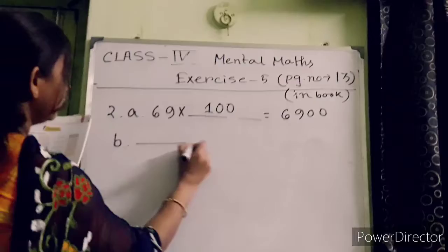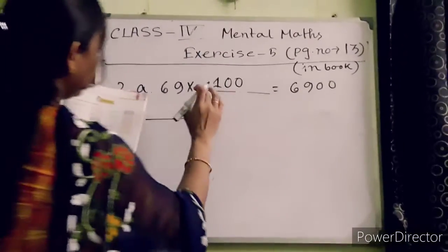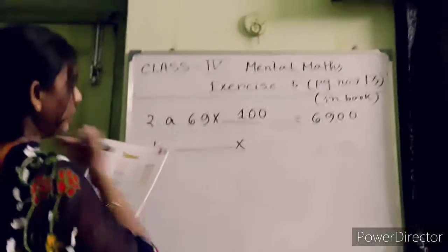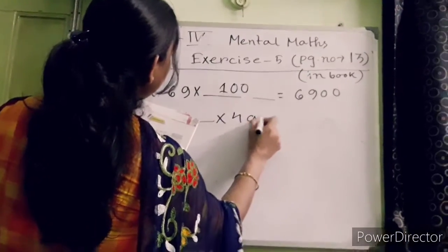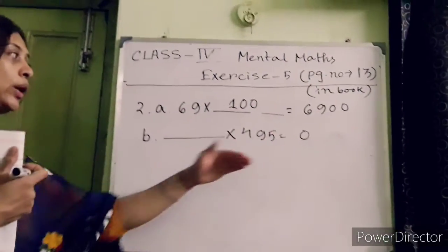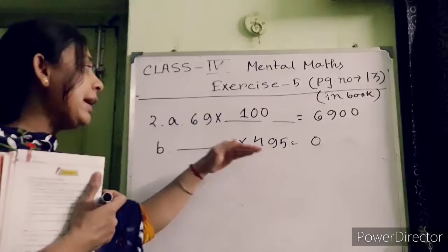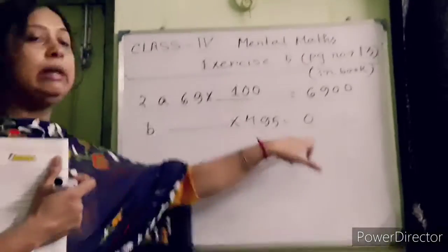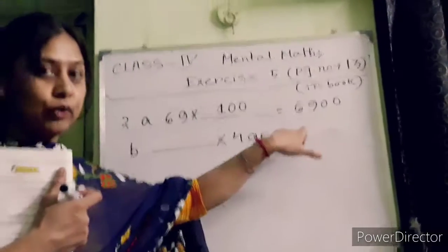B: First you put there, after you will put the multiplication sign. 495 equals 0. What I have told in my video: when you multiply any number with 0 you will get 0. So the answer is 0.